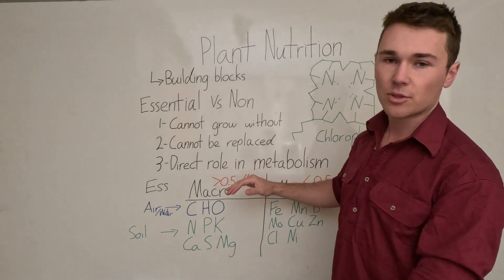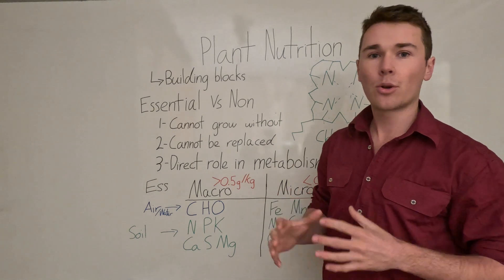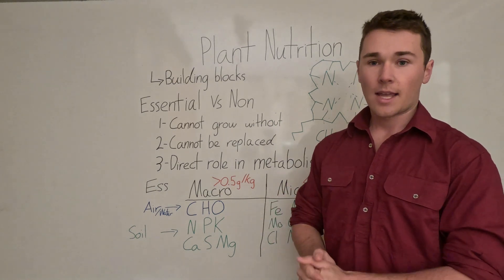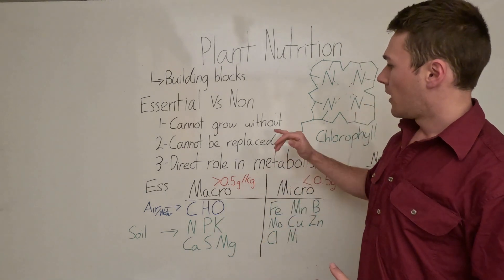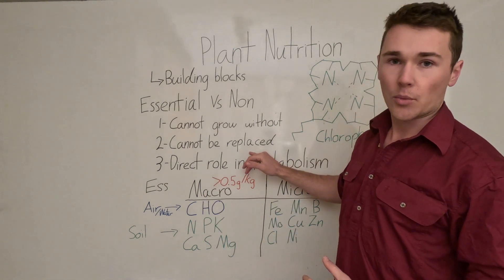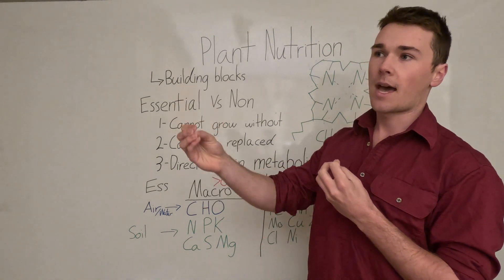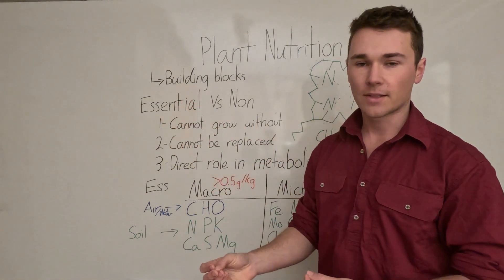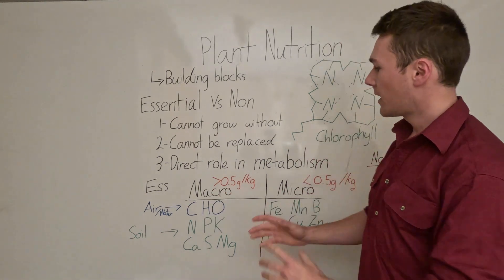An essential plant nutrient has three principles or definitions. The first one is that the plant cannot grow without this nutrient - it has to have this nutrient otherwise it cannot grow at all. The second principle is that it cannot be replaced. Some nutrients you can substitute another nutrient for it, but if you can substitute it out it's not essential.